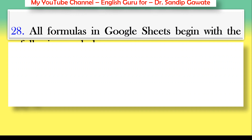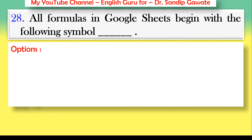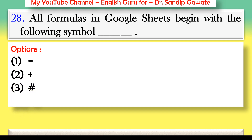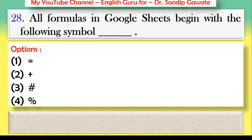Question 28: All formulas in Google Sheets begin with which symbol? Options: equals sign (=), plus (+), hash (#), or percentage (%). The correct answer is option number one — the equals sign (=).